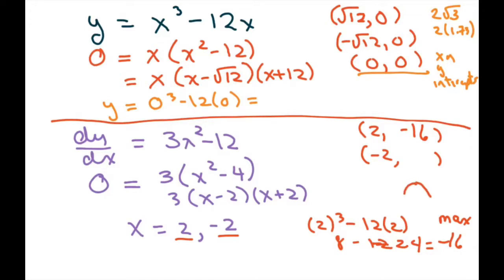Since it's negative, that means it's a maximum because that means the curve is starting to go down. If you have a curve like that, it's starting to go down. So that would be a max. Now plug in your negative 2.